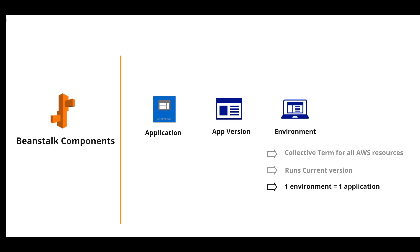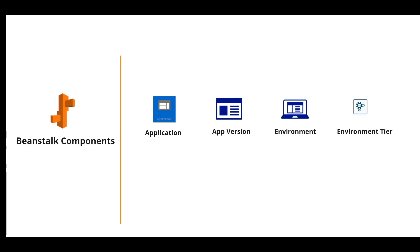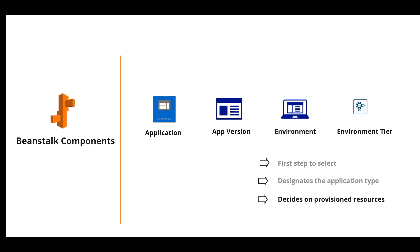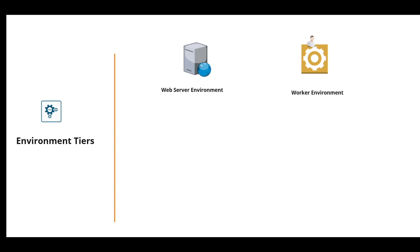Next we have Environment Tier. The first step in launching an Elastic Beanstalk environment is selecting the environment tier. The environment tier is responsible for designating the type of application that will be running. It determines whether Elastic Beanstalk provisions resources to support a web application handling HTTP requests or one handling background jobs, and it decides which resources will be provisioned. When launching an Elastic Beanstalk environment for the first time, Beanstalk will ask you to choose between the two environment tiers depending on whether you need to support HTTP/HTTPS requests or background processing tasks.